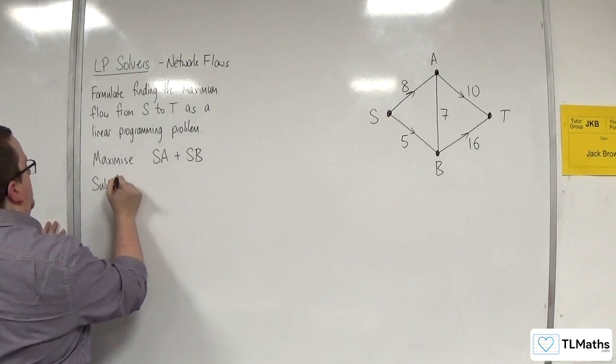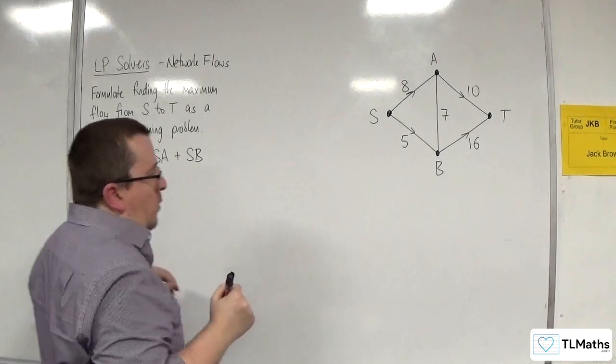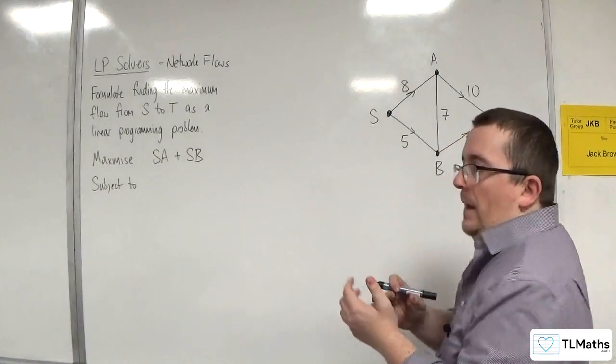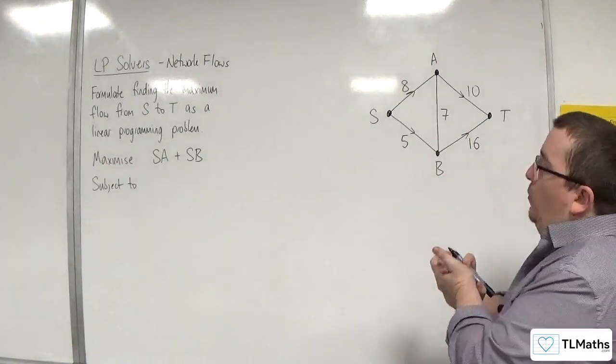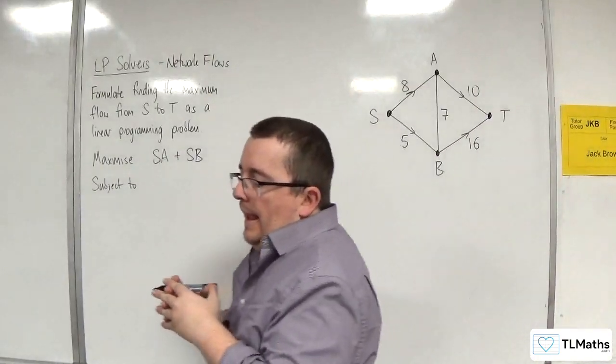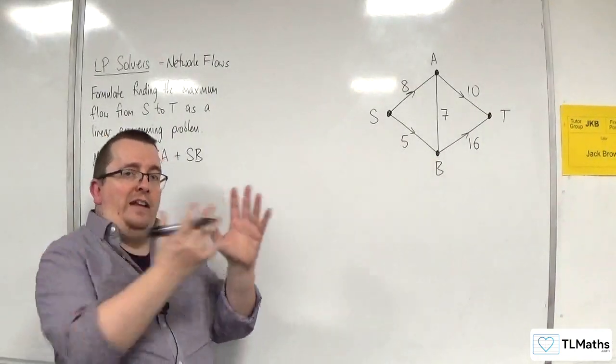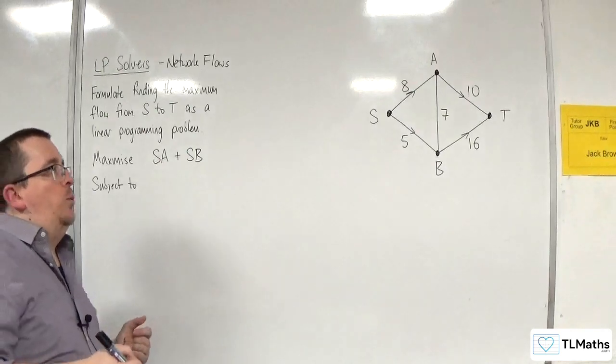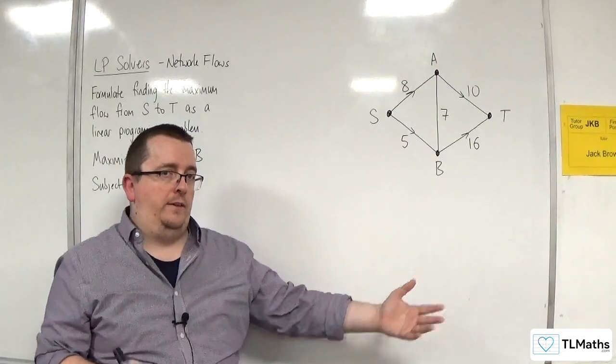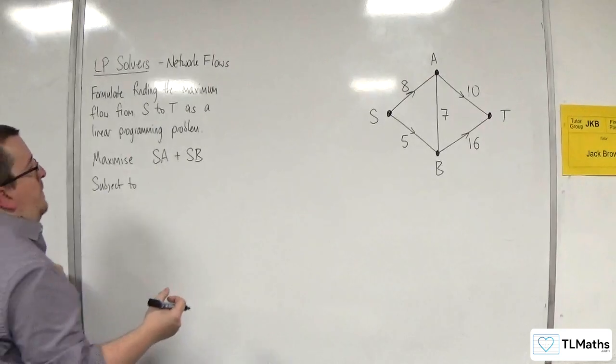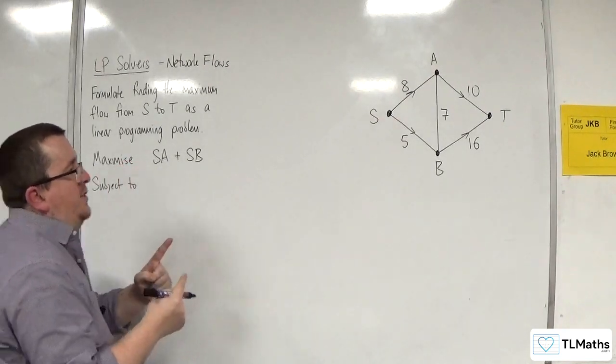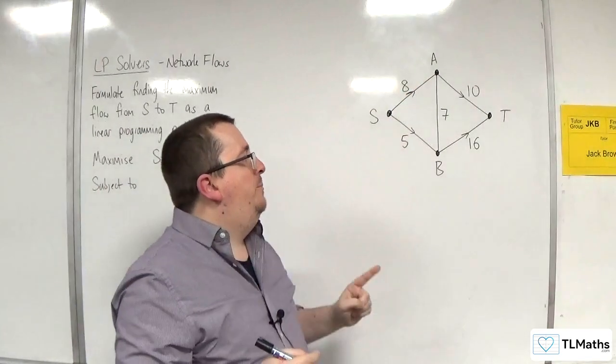So subject to, what constraints am I going to need? Well, what I need is that all of the flow going into a vertex will equal the flow going out of the vertex. So I need a constraint for A and B.